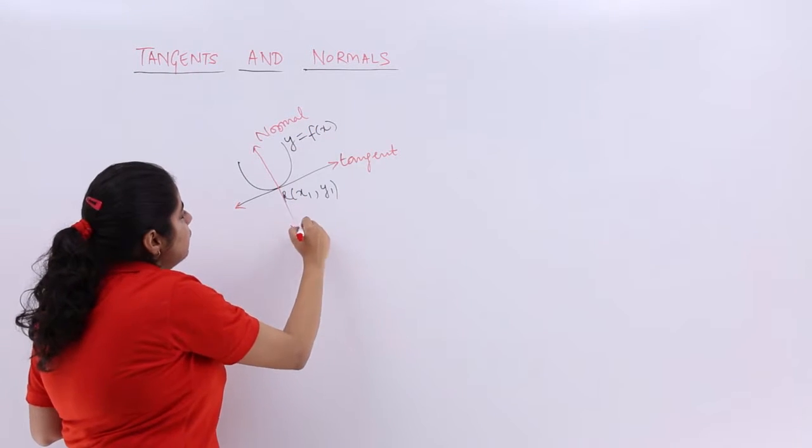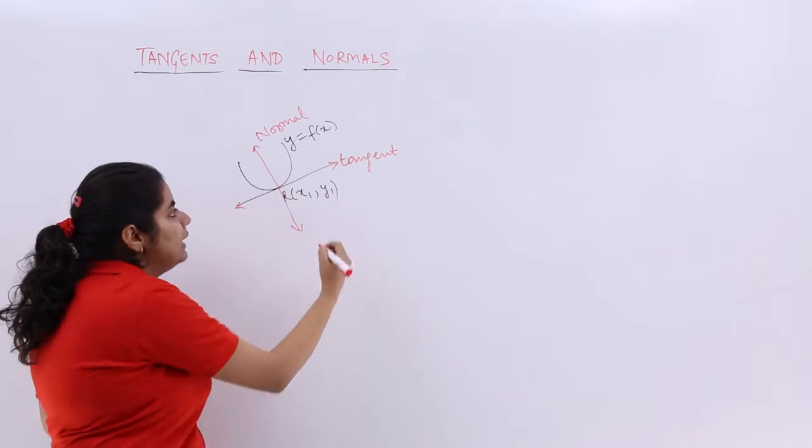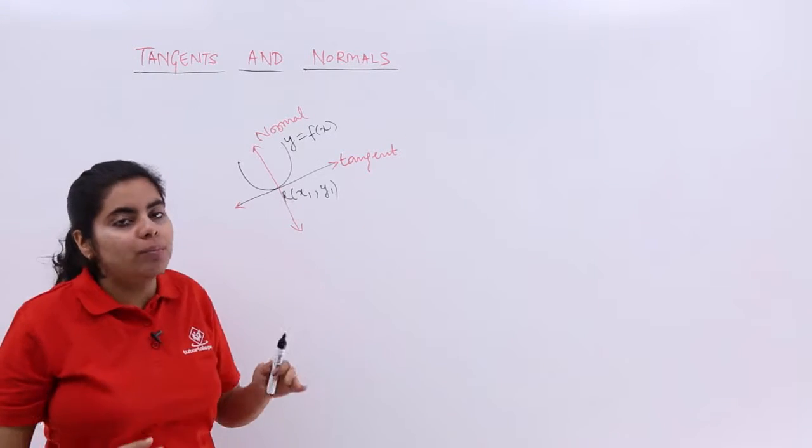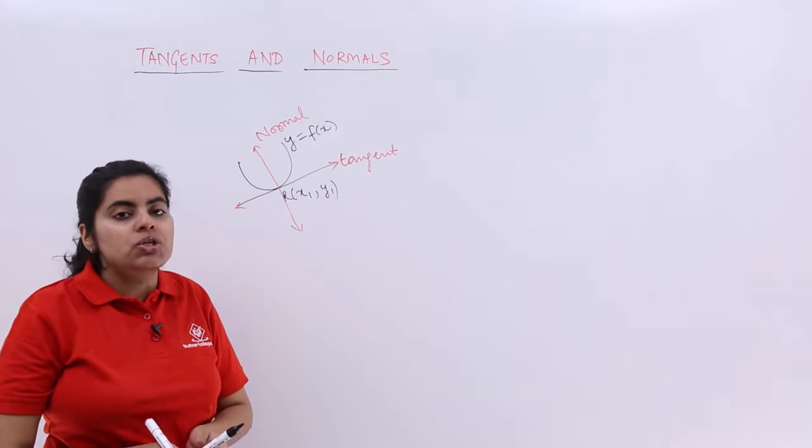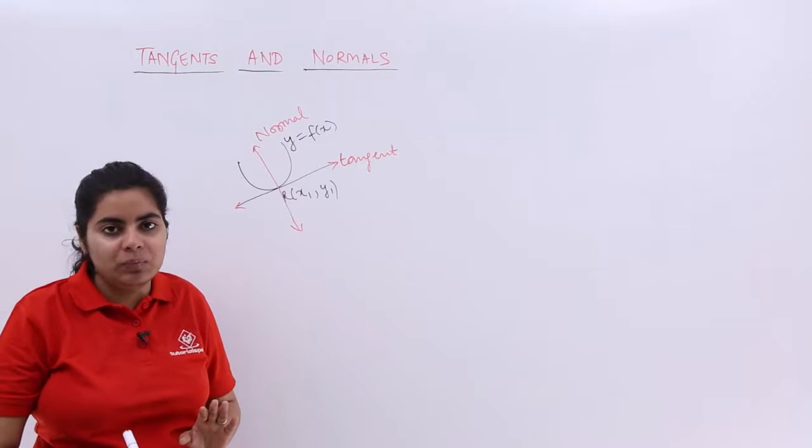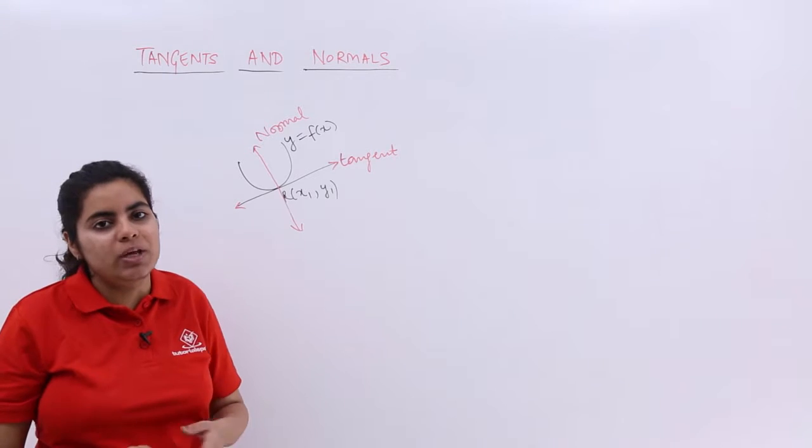And after all that we studied, we concluded that yes, dy/dx is the slope of the tangent. And since my tangent and normal are perpendicular to each other, minus 1 upon dy/dx is the slope of normal. Now, simply when you know the slope, definitely you can easily find out the equation.